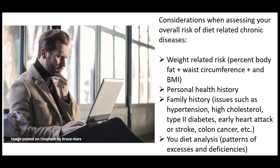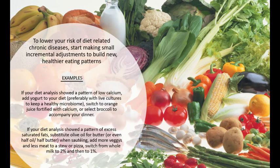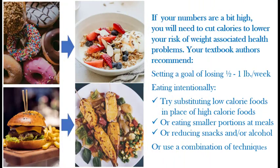Suppose that you look at those risks and decide you want to make some adjustments to help lower those risks. If your diet analysis showed patterns of deficiencies or excesses, make those little adjustments to balance out those nutrients. If your family history has cardiovascular disease, limit those saturated fats and cholesterol and increase those omega-3s. Start making small adjustments and then make them into a regular eating pattern. If your body fat, BMI, and waist circumference indicated an increased risk, try some of the techniques suggested in the textbook. If those numbers were a bit too high, you're going to need to cut calories. There are lots of ways to do that, but it does require thinking about what you're eating and being more intentional about your food intake. You can substitute low-calorie foods in place of high-calorie foods, eat smaller portions at meals, or cut out a snack or alcohol.